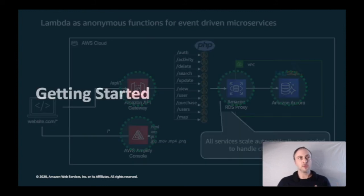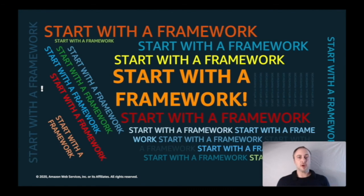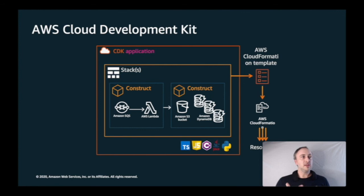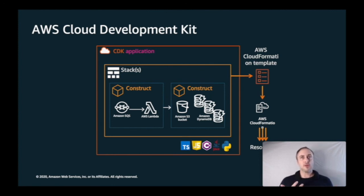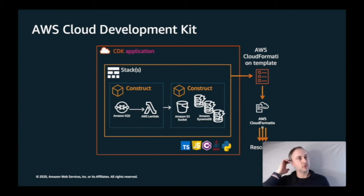Where do you get started? My advice is always to start with a framework. Normally I recommend SAM — the Serverless Application Model from AWS — or the Serverless Framework. But for this particular instance I'd recommend looking at the CDK, the Cloud Development Kit. The CDK enables you to define cloud resources using a programming language like TypeScript, JavaScript, Python, C#, or Java. Its main power is allowing you to create reusable, shareable cloud abstractions called constructs — higher-level components that encode best practices. When you deploy, the template gets transposed into CloudFormation syntax and resources get deployed onto the AWS cloud.